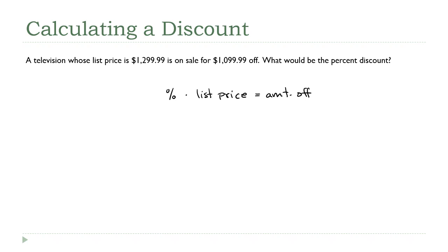It's the percentage that we're looking for, so I'll put an X there. We know the list price — that's $12.9999. How much is the amount off? Well, if $12.9999 was the original price and $10.9999 is the new price, subtract those two and you get the amount it was reduced in dollars. So that's going to be $2.00.